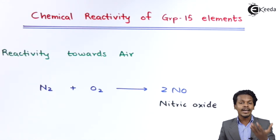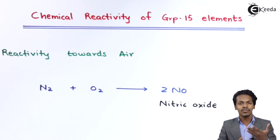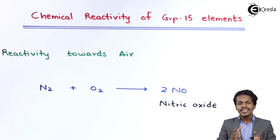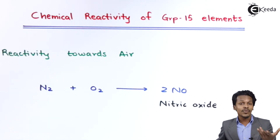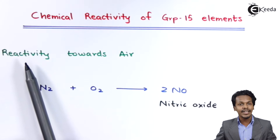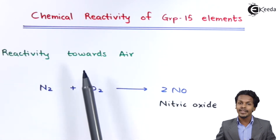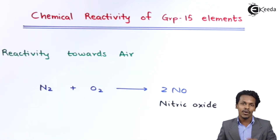If we talk about the other elements belonging to group 15, for example phosphorus or bismuth, in this case they are very much reactive towards oxygen, and that is the reason they will form their corresponding oxides. This was one of the reactions representing the reactivity of group 15 elements with air or with oxygen.